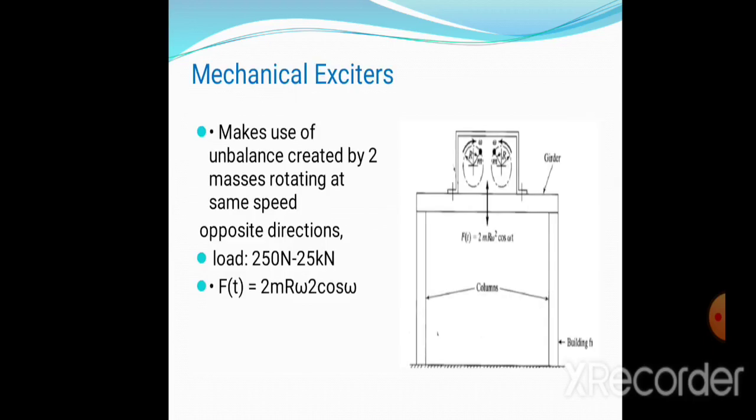Mechanical exciters use unbalance created by two masses, m1 and m2. Because of these unbalanced masses, unbalanced centrifugal forces act on it, having load 250 Newton to 25 kilonewton. The external forces are 2 m r omega squared cos(2 omega t).